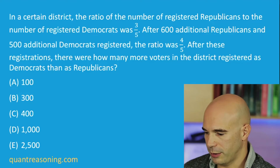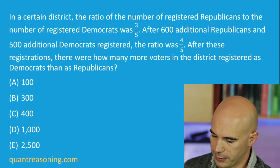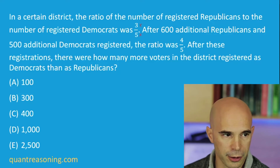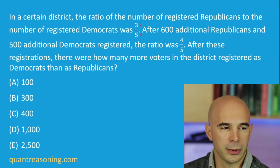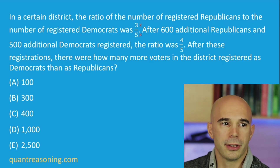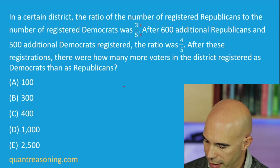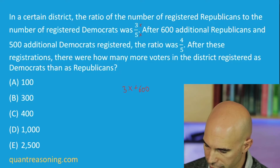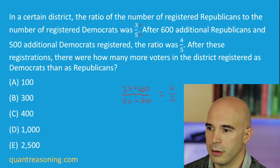I suggest we start with algebra — that's probably how most people would solve this question. Use a scale factor; let's call it X for the initial ratio. The actual number of registered Republicans was 3X, and Democrats was 5X. After new registrations, we have 3X + 600 Republicans and 5X + 500 Democrats, and we're told this new ratio works out to 4 to 5.